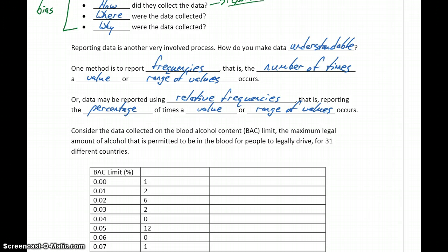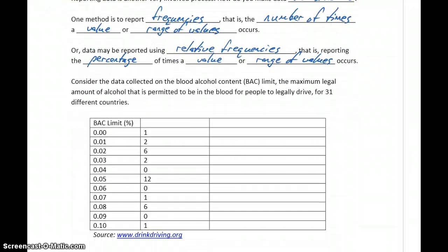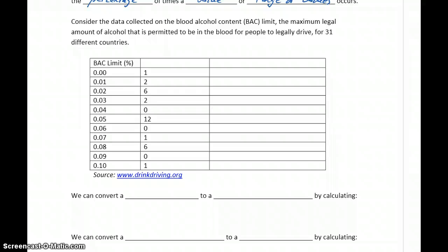So rather than saying, in our survey, 27 people make between $40,000 and $50,000 a year, we could say 67% of people surveyed make within that range. So it just gives you a little bit better idea of how big that number is out of the group. So let's consider some data below that was collected on blood alcohol content limit, so the BAC, which is the maximum legal amount of alcohol that's permitted to be in the blood for people to legally drive. So this information was collected from 31 different countries. So we're going to call this number 31, we're going to let that equal N. N is our typical value we'll use to reference our sample size or the number of people surveyed, number of countries surveyed. So basically we have 31 total data values.